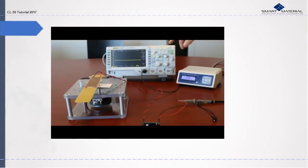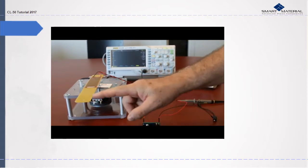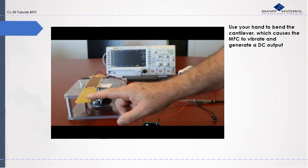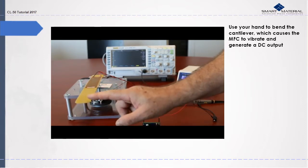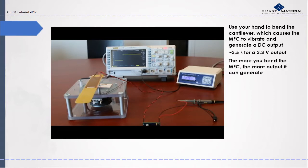Now let us do the same experiment without using the shaker. Make sure the oscilloscope is on. Use your hand to bend the cantilever which causes the MFC to strain and generate a DC output. The time the CL-50 needs to activate the 3.3 output voltage is after 3.5 seconds. The more you bend the MFC the more power it will generate.